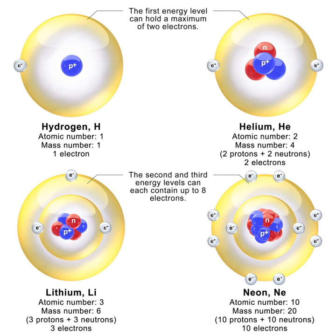Atomic nuclei are formed by a number of protons, Z the atomic number, and a number of neutrons, the neutron number, bound together by the nuclear force. The atomic number defines the chemical properties of the atom, and the neutron number determines the isotope or nuclide. The terms isotope and nuclide are often used synonymously, but they refer to chemical and nuclear properties, respectively.